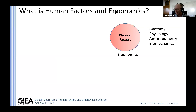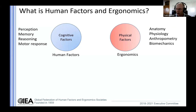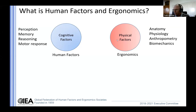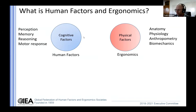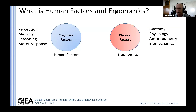Historically, one of the key areas of interest has been physical factors — the anatomical, physiological, anthropometric, and biomechanical characteristics of humans, and the demands that physical tasks place on those characteristics. This is very often referred to as ergonomics. Much of this work comes from a kinesiology or engineering perspective. We've also had a focus on cognitive factors: human perceptions, memory, reasoning, and motor responses, historically referred to as human factors, coming from a psychological perspective.